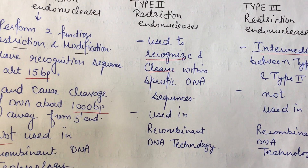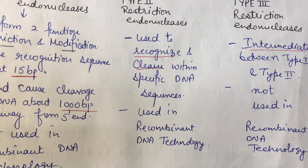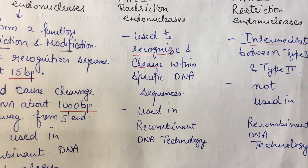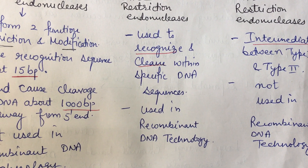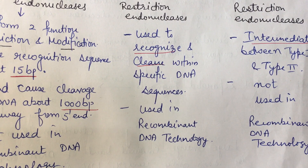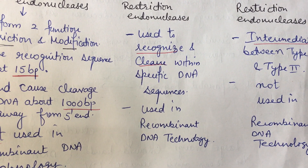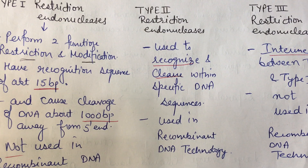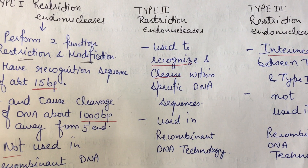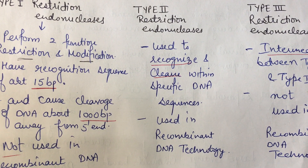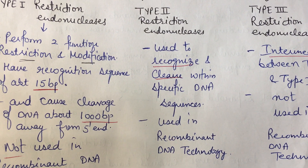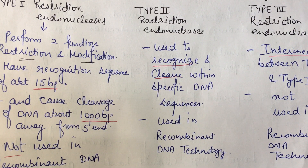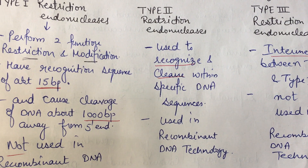Type 3 restriction endonuclease enzymes are intermediate between Type 1 and Type 2, sharing characteristics of both. Type 3 enzymes are also not used in recombinant DNA technology. So both Type 1 and Type 3 restriction endonuclease enzymes are not used in recombinant DNA technology.